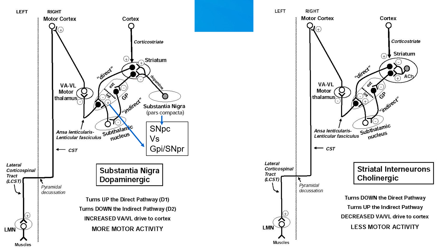In other words, the direct pathway — which turns up motor activity — is excited by dopamine, while the indirect pathway — which turns down motor activity — is inhibited. Both of these effects lead to an increase in motor activity.